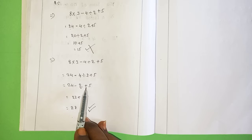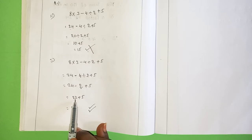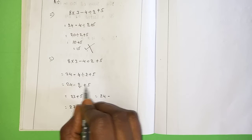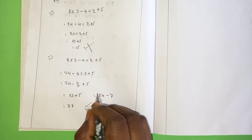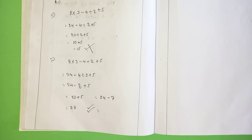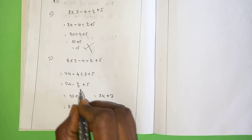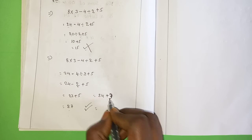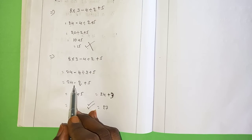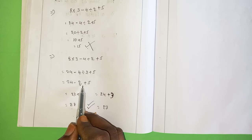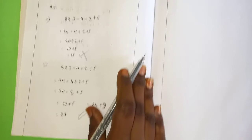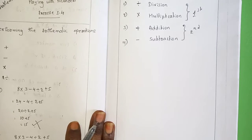There is one subtraction and one addition: 24 minus 2 is 22, plus 5 is 27. If I do 2 plus 5 first, that gives 7 — wait, actually 5 minus 2 is 3, so 24 plus 3 is 27. You get the same answer, which shows addition and subtraction have the same priority. Let us see one more example.